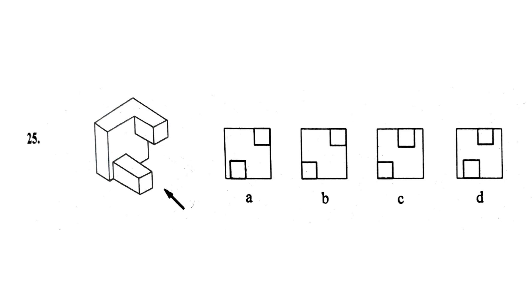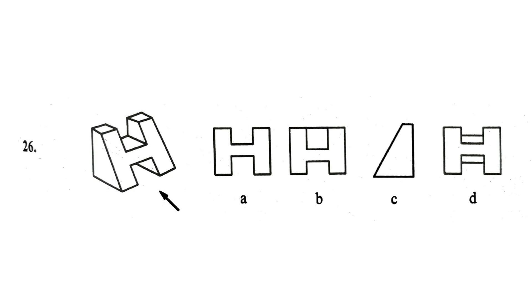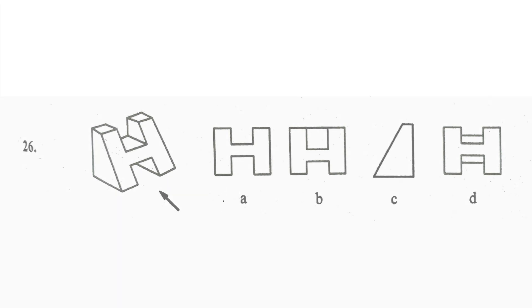Next: there are two squares on a surface — the lower square is slightly shifted and the upper square is intact, hence the right answer is option A. Moving on to the last question: we clearly see an H with no edge or any line at the top, hence the right answer is option A.